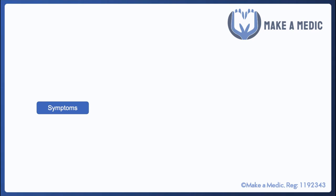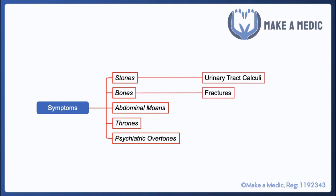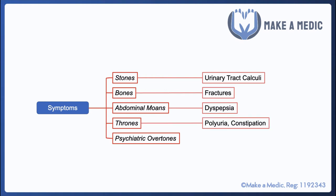The clinical manifestations of hypercalcemia are famously remembered as: stones, bones, abdominal groans, thrones, and psychiatric overturns. Regarding stones, hypercalcemia increases the risk of forming urinary tract calculi, which are usually made of calcium oxalate. The resorption of calcium from the bones increases the risk of fractures. High levels of calcium can also result in dyspepsia. Thrones refer to changes in toileting habits — patients may pass large volumes of urine more frequently and may also become constipated. Finally, high calcium levels can have psychiatric effects, resulting in depression and in some cases psychosis.